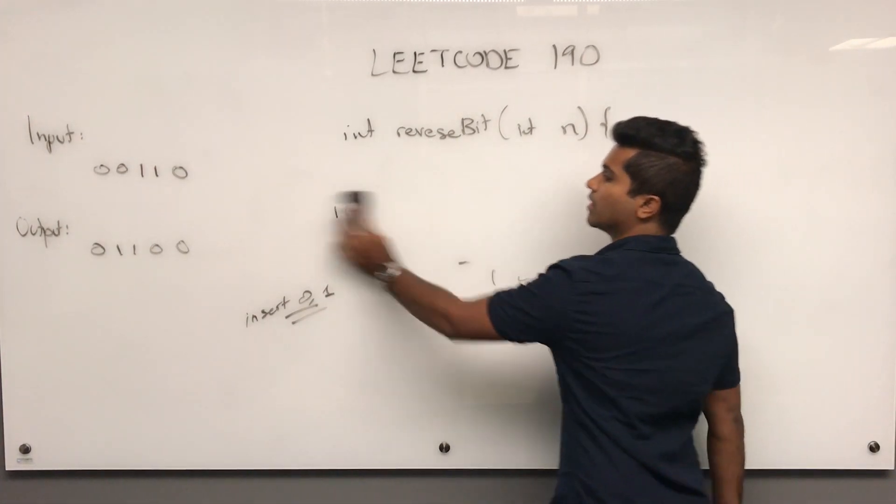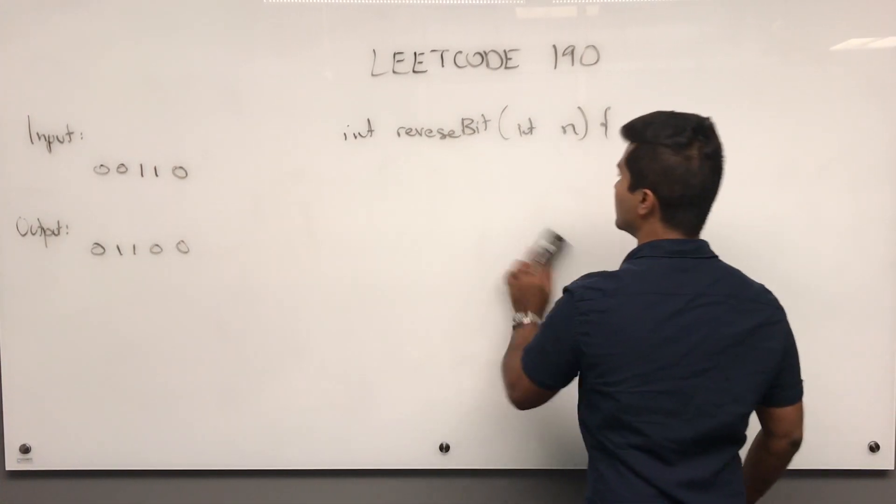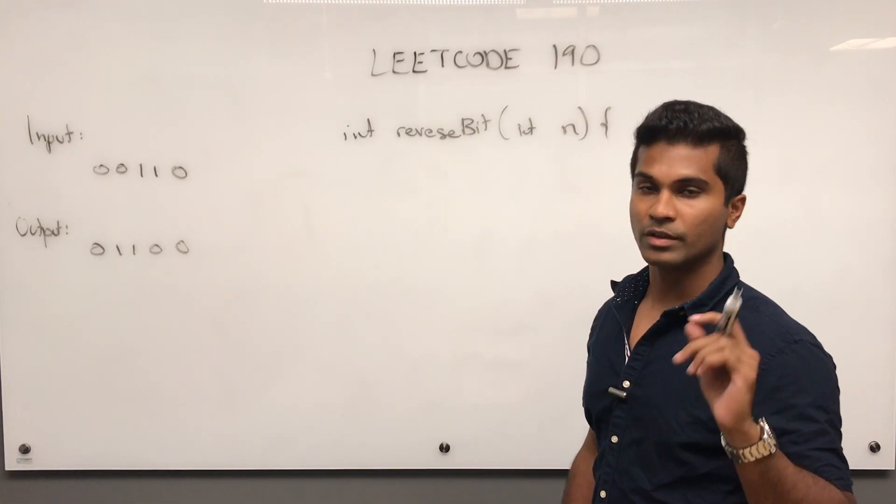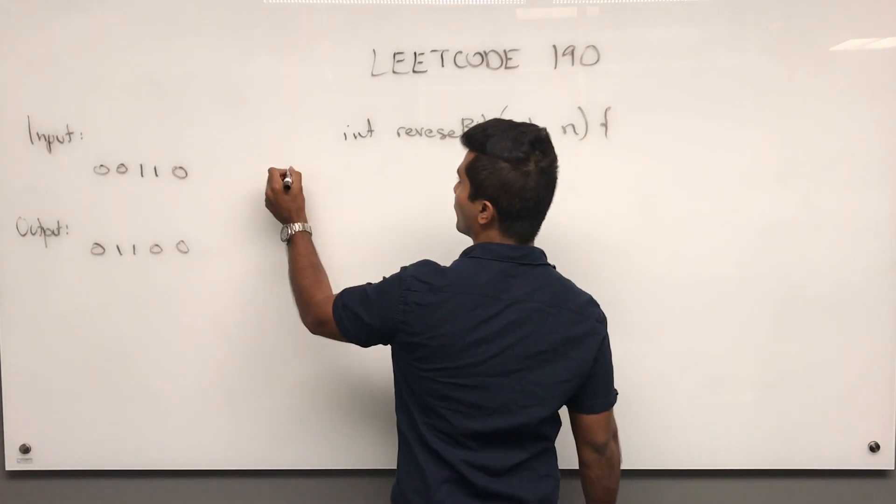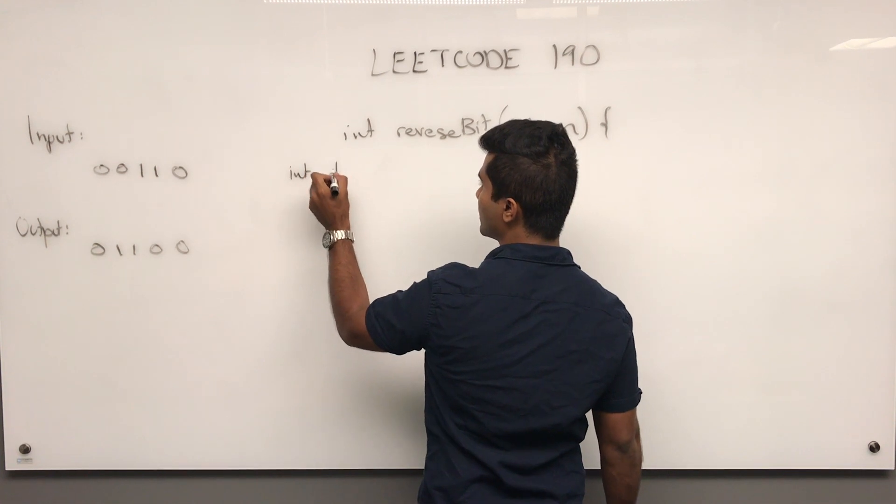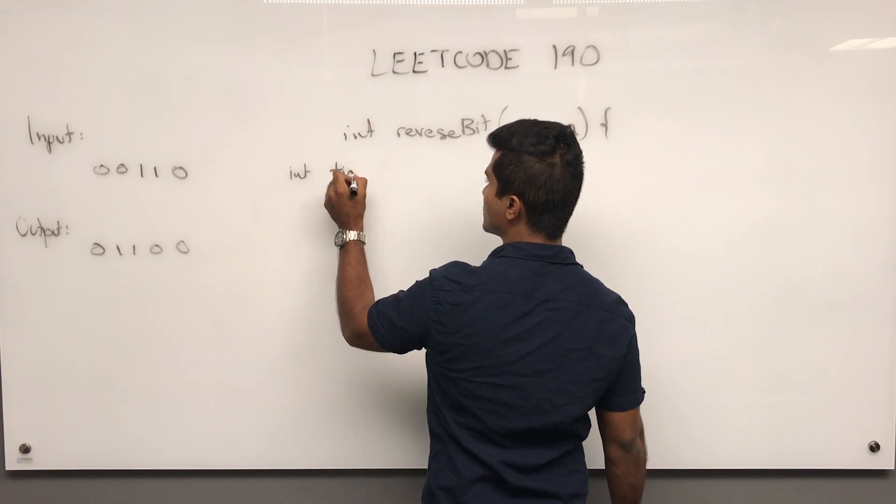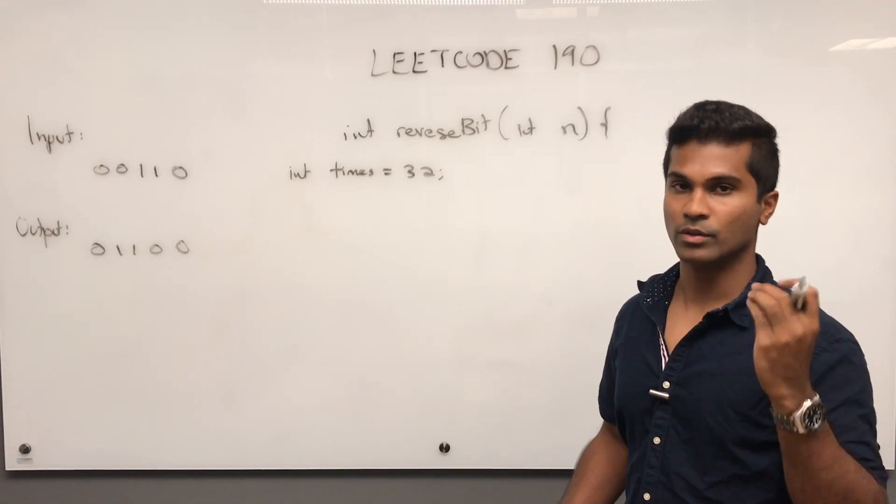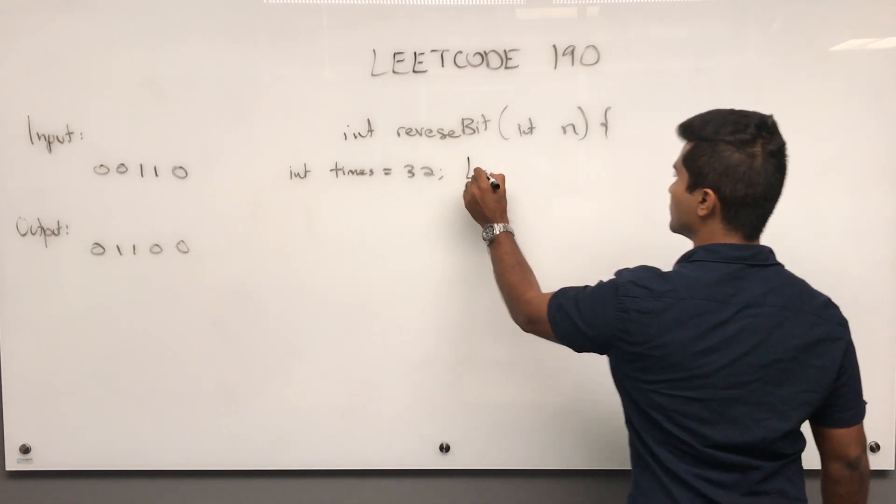Now that we've got the explanation, let's go into the code. The actual problem is 32-bit, so I'll say times equals 32, because we need to retrieve 32 individual bits and put them in a list.